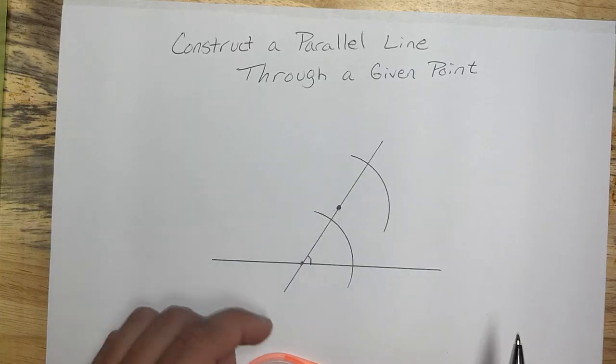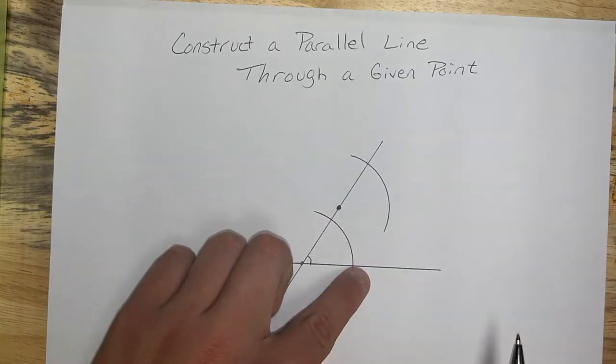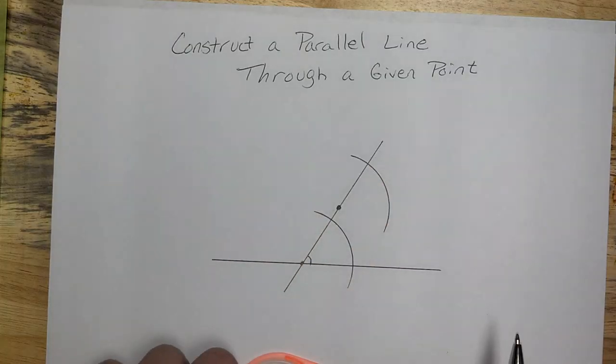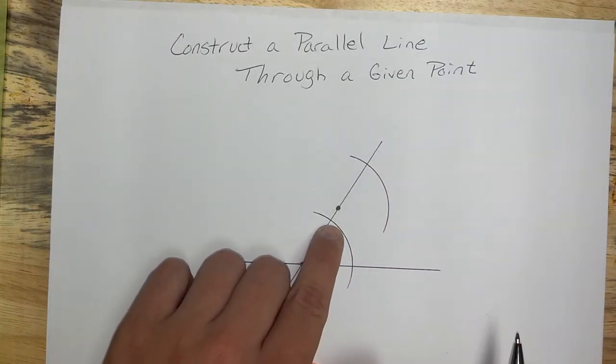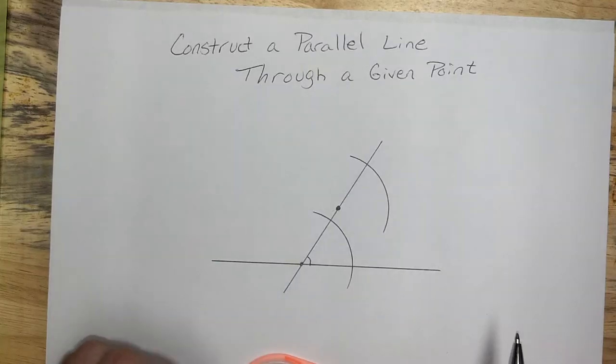Now, the other part that we have to come up with is to figure out how big this angle is so that I can recreate it up here. Well, I have a crisscross here, I have a crisscross here, so I can use those.